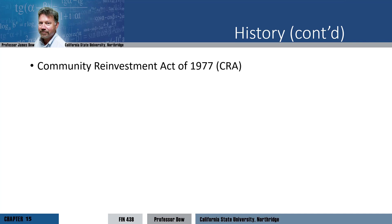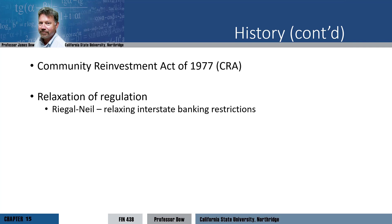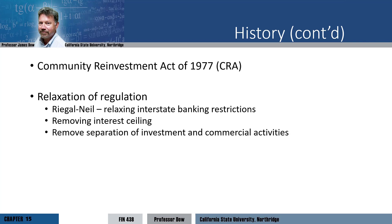The Community Reinvestment Act of 1977 represented an increase in the focus on consumer protection in banking regulation. It requires banks to make loans across all areas of the community, including poorer areas. We also saw relaxation of some of the past regulations. The Regal-Neil Act removed restrictions on interstate banking, and as a result, we saw a wave of bank consolidation. The interest rate ceiling on deposits was removed, as was the strict separation of commercial banks and investment banks.